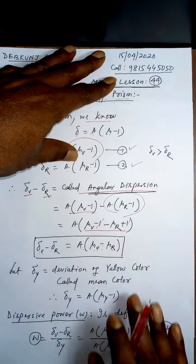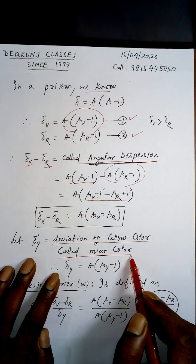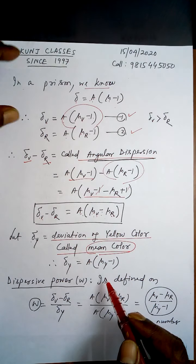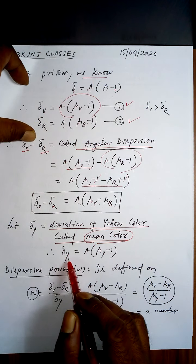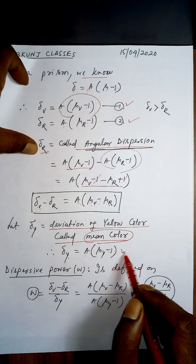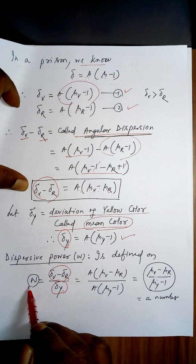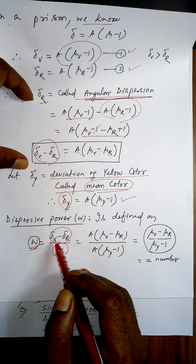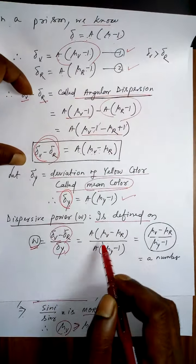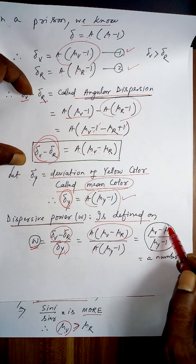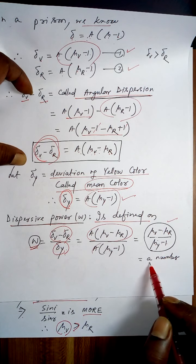Let delta Y be the deviation for yellow color, which is called the mean color. Using the same expression, delta yellow equals A(mu_Y minus 1). The ratio of angular dispersion to mean deviation — that is (delta V minus delta R) divided by delta Y — is called dispersive power, omega. Substituting and cancelling A, omega equals (mu_V minus mu_R) divided by (mu_Y minus 1), which is a dimensionless number.